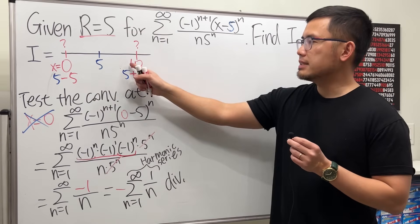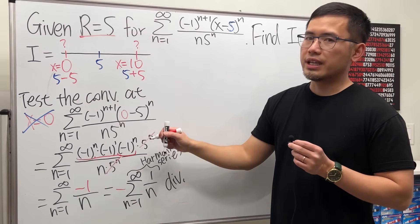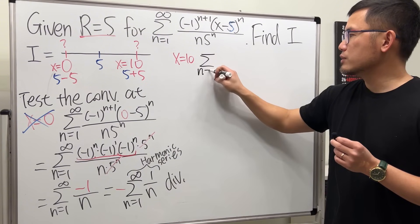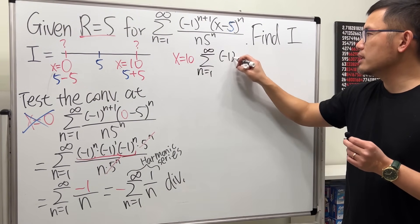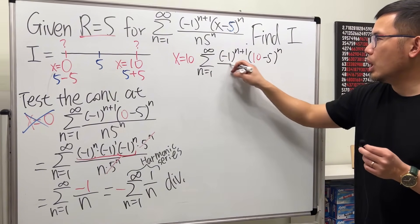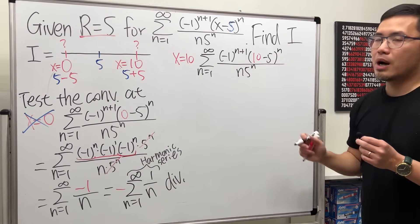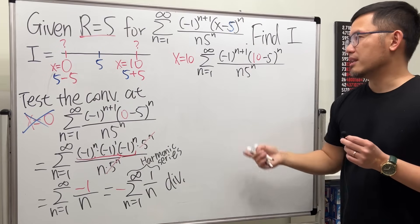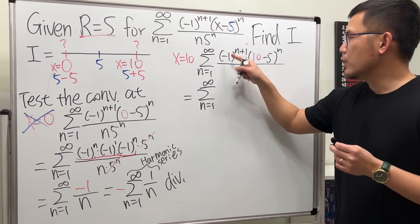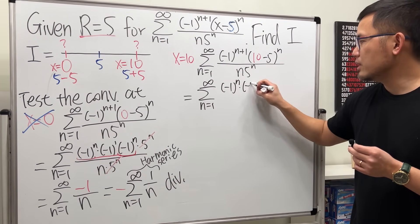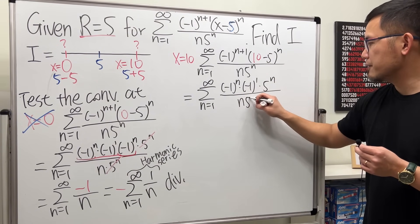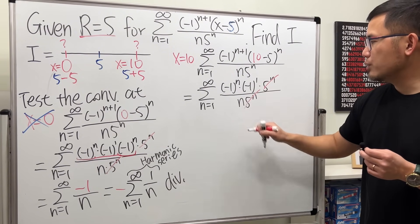Now test x equals 10: substitute 10 into x. We get the sum from n=1 to infinity of [(-1)^(n+1) times (10-5)^n] divided by [n times 5^n]. That's (-1)^n times (-1)^1 times 5^n over n times 5^n. The 5^n terms cancel again.